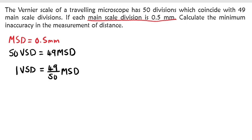The least count is the minimum possible measurement that could be done using an instrument. The least count is given by the main scale division minus the vernier scale division.